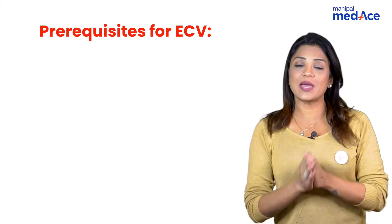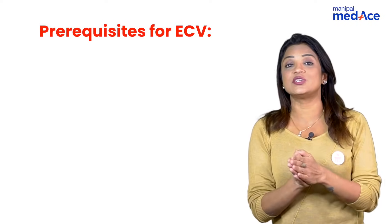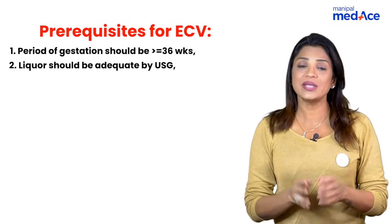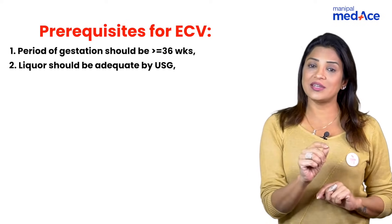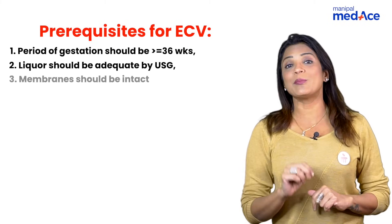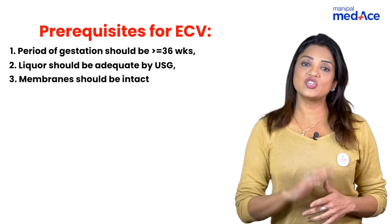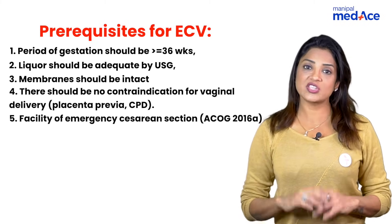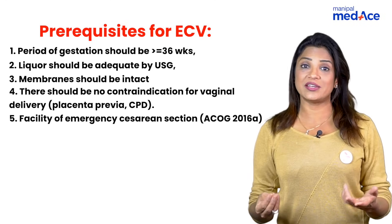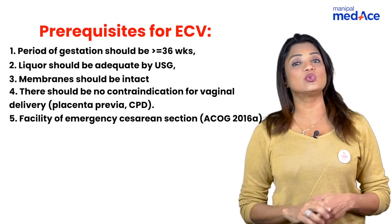The prerequisites of ECV, apart from gestational age and availability of emergency caesarean section, are: liquor should be adequate on sonography — liquor should not be scanty, otherwise the baby will not move. Membranes should be intact; there should be no rupture of membranes. And there should be no contraindication for vaginal delivery — no CPD, no placenta previa — only then will you do an ECV.